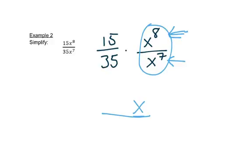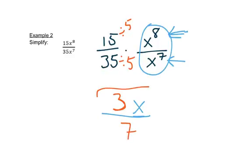Now let's deal with the 15 and 35. What goes into both 15 and 35? You could use your calculator to simplify that, but 5 goes into both. So 15 divided by 5 is 3, and 35 divided by 5 is 7. The 3 is on the top, the 7 is on the bottom — and this is our answer.